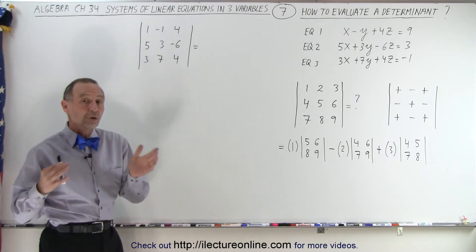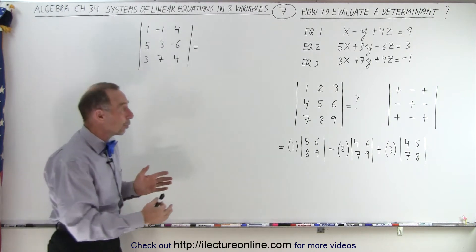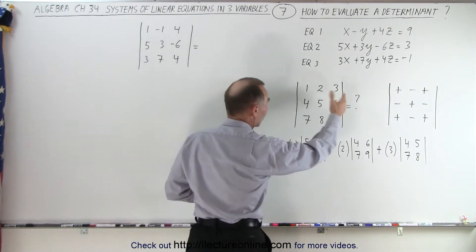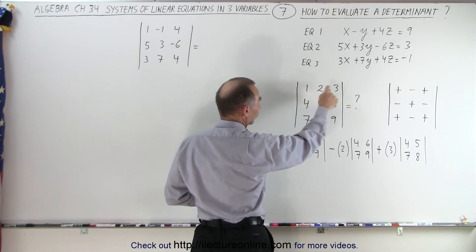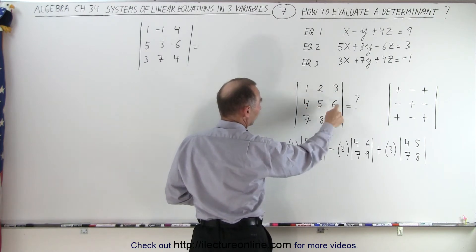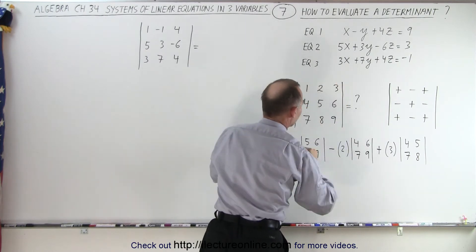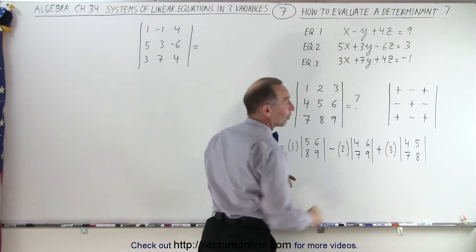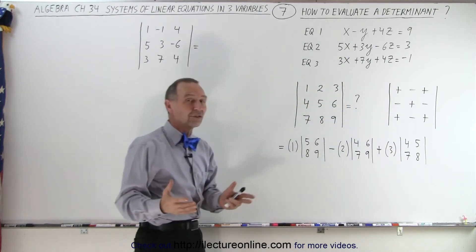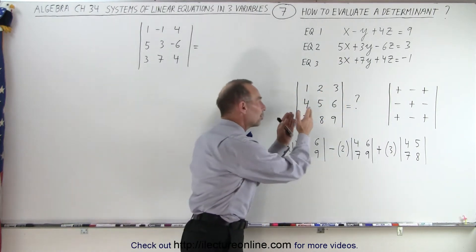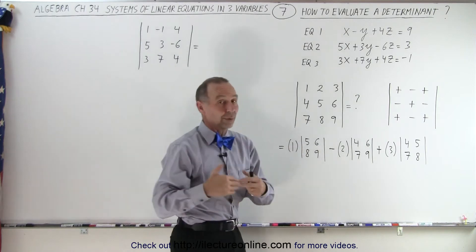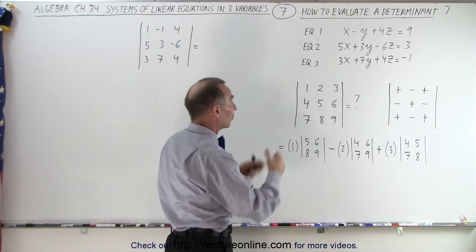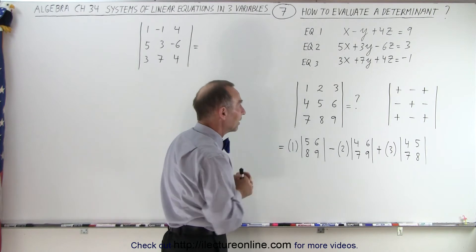First, we're going to take a more benign system. We'll simply write 1, 2, 3, 4, 5, 6, 7, 8, 9 inside the vertical lines. Assuming those were the coefficients of the three equations, how do you evaluate this? That's what we need to do in order to solve the system of equations using that method.